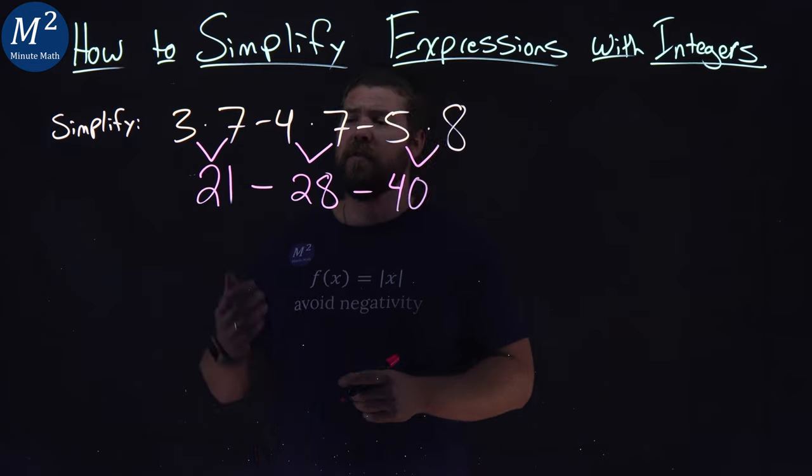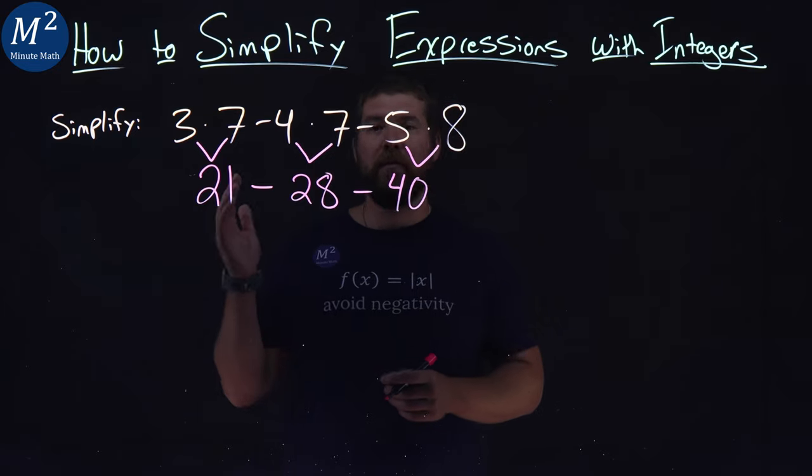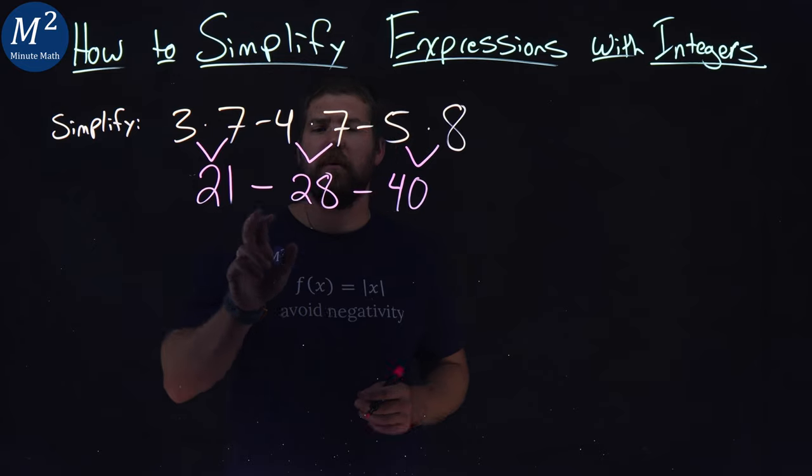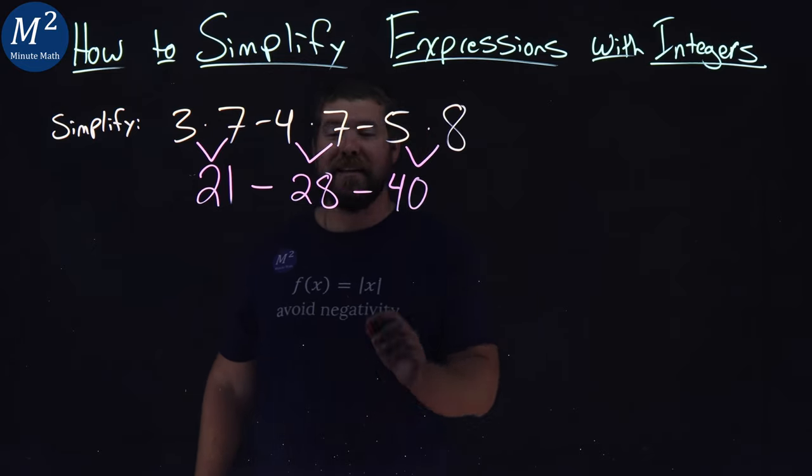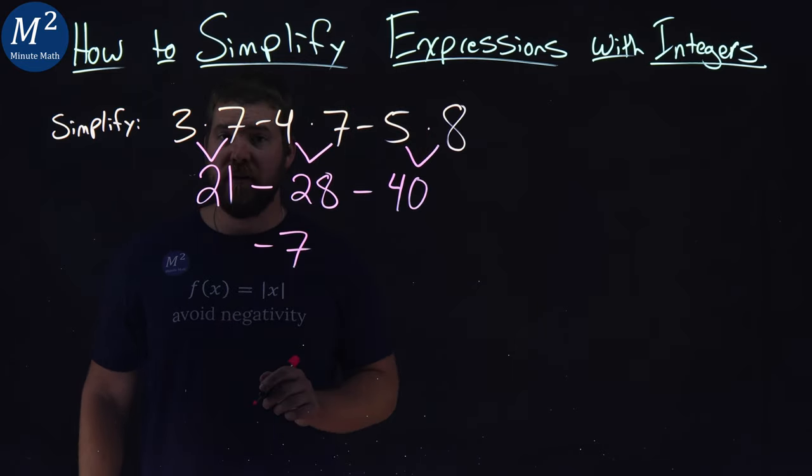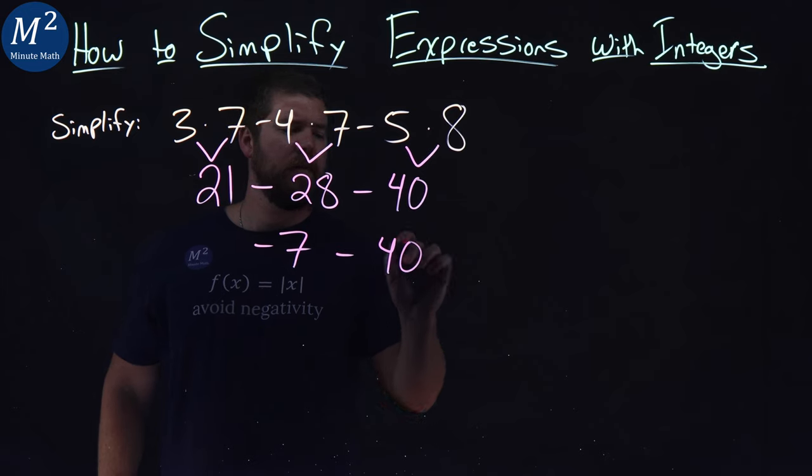Now what's left is 3 numbers. We're subtracting all the way through, and so we read left to right. 21 minus 28 comes first, and that is a negative 7. Then we have a minus 40 here.